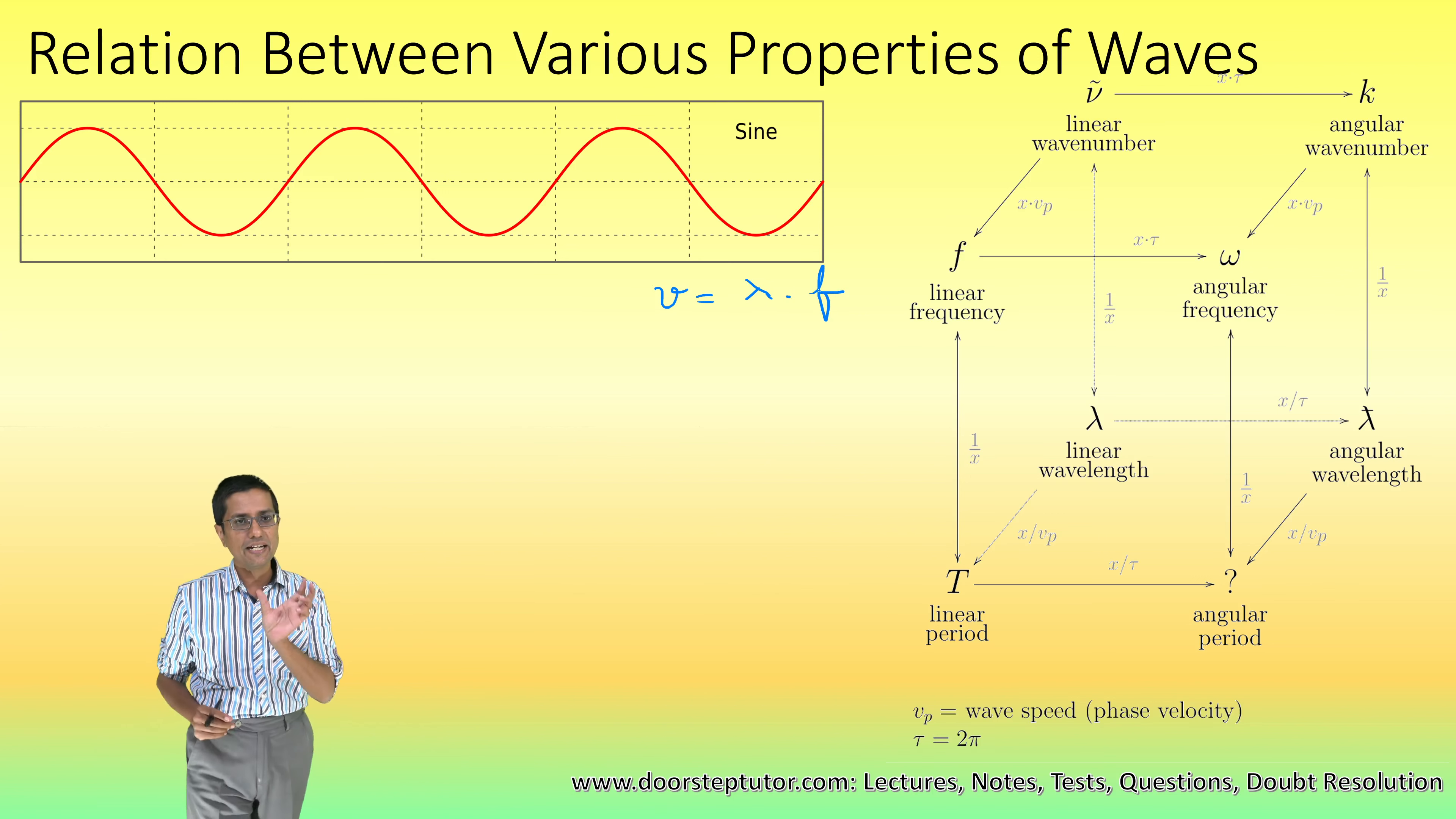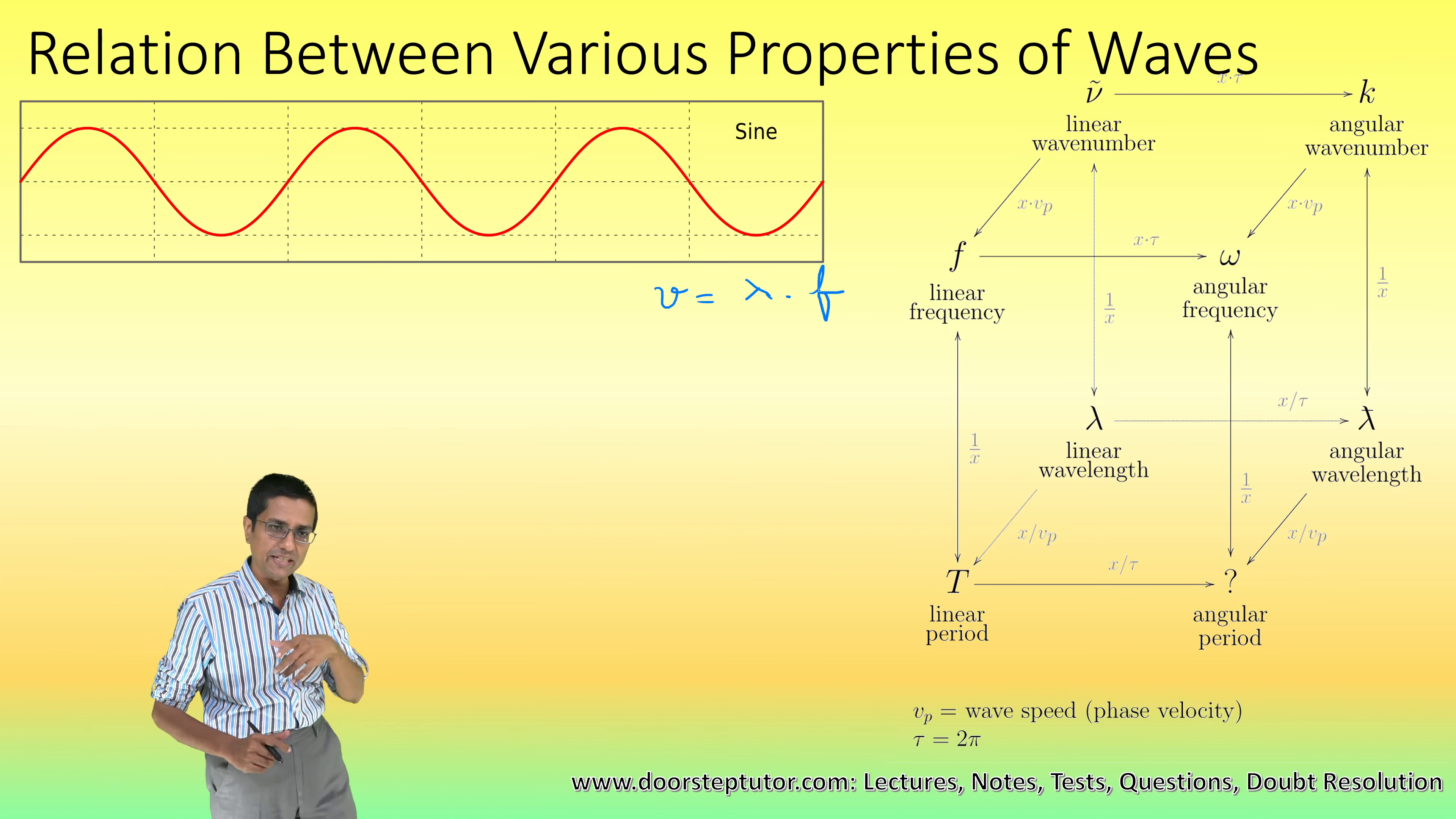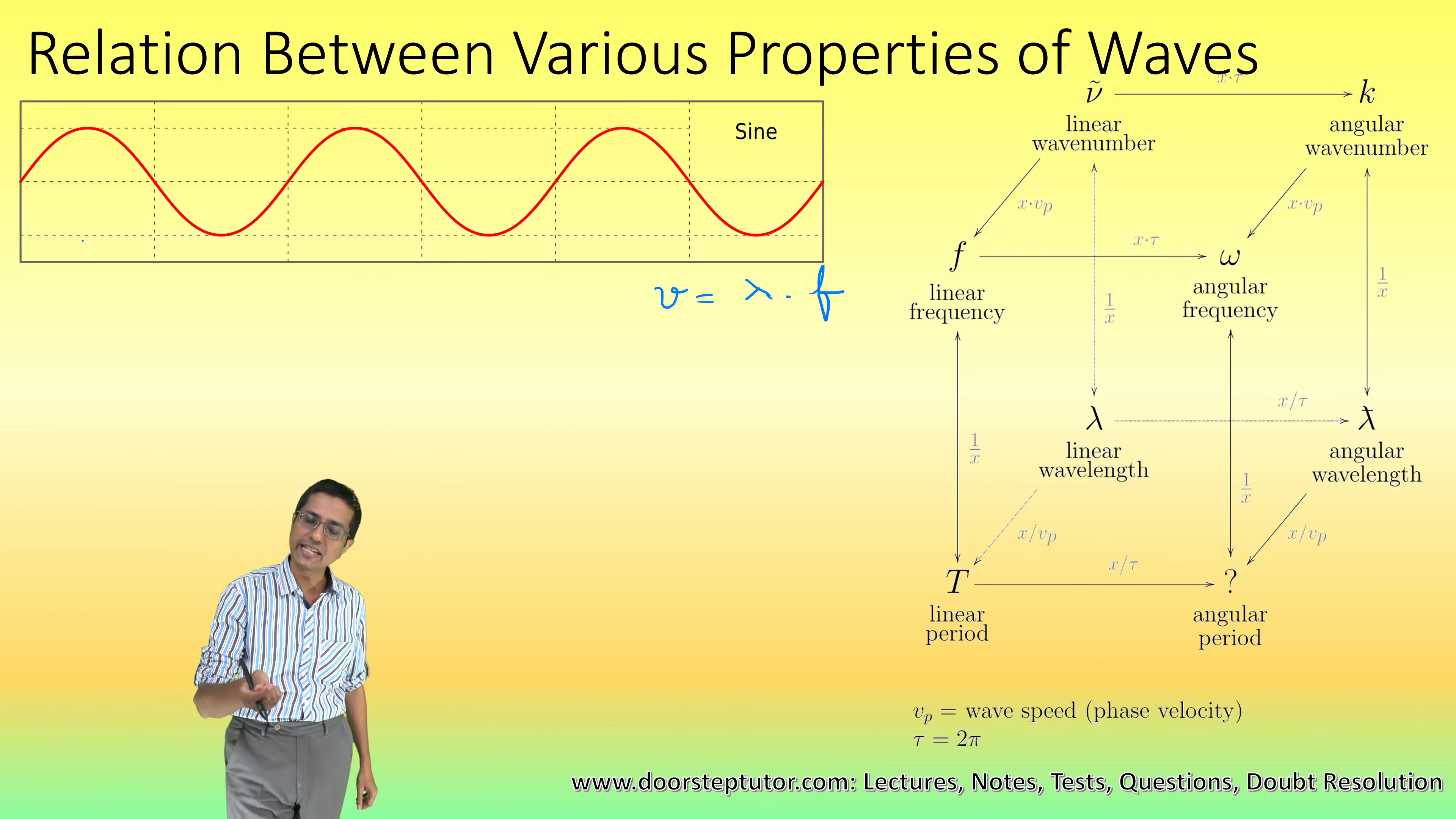So this is the relation: wave speed is equal to lambda, the wavelength, multiplied by frequency. Frequency is the number of times the wave pattern would repeat in one second.